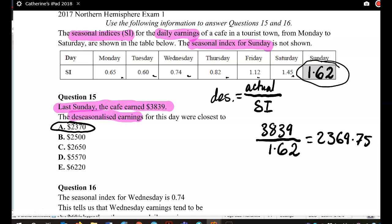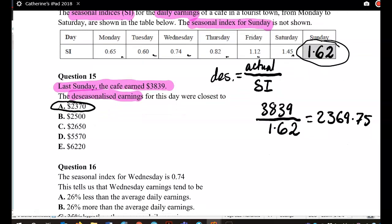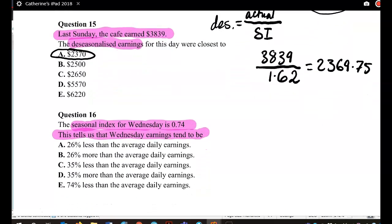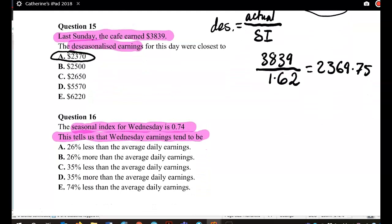Now in question 16, the seasonal index for Wednesday is 0.74. This tells us that Wednesday's earnings tend to be. What do Wednesday's earnings tend to be? Well, let's look at this. Remember, with seasonal indices, we always have to compare them to 1. Are they above 1? Are they below 1?